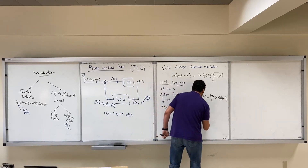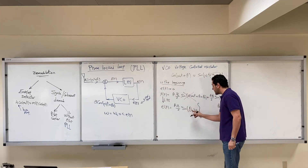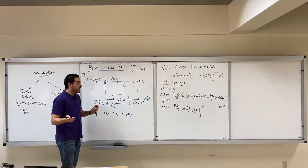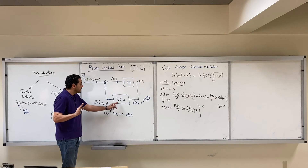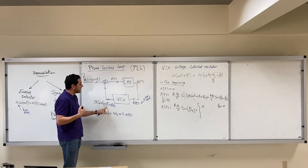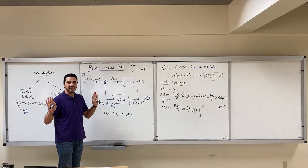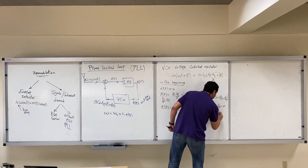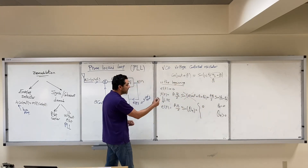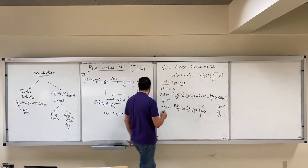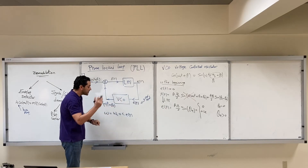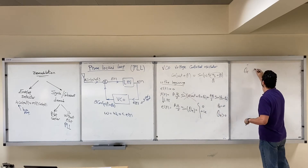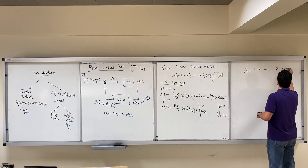What does this mean? If θₑ is zero, then sin(0) = 0, so the error signal will be zero. If θ₀ equals θᵢ — there is no error between them — the error signal is zero and the VCO keeps generating frequency ωc. Everything is synchronized. But what if θₑ is positive? If θₑ is positive, sin(θₑ) is also positive, giving a positive error signal. And θₑ positive means θᵢ is greater than θ₀.